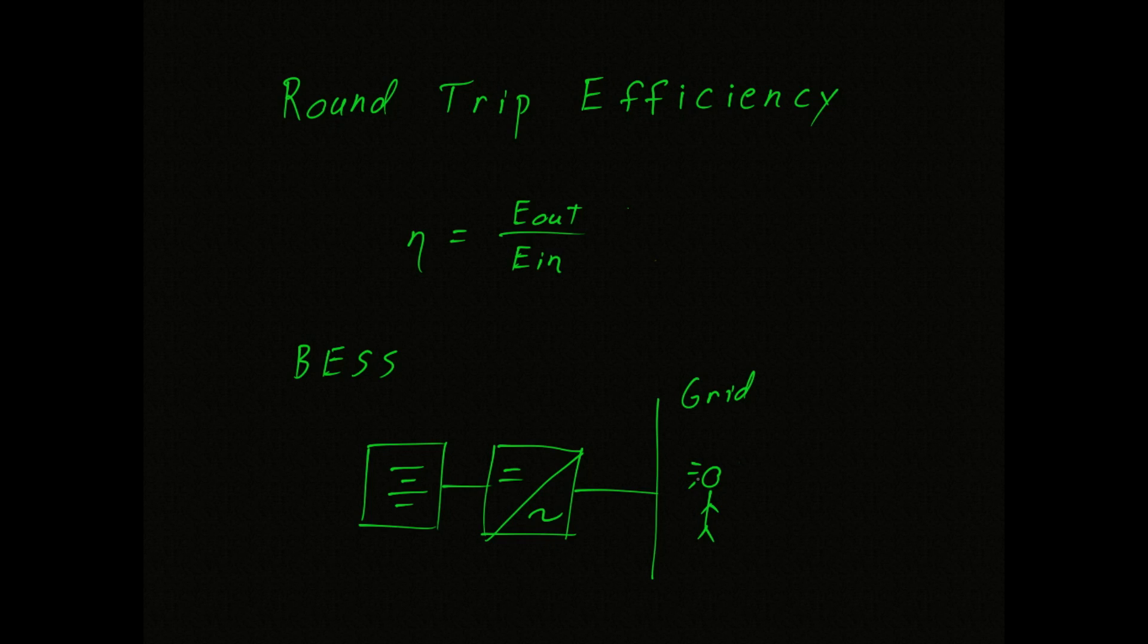Suppose the battery is completely drained. We're going to charge the battery using energy from the power grid. The energy is going to come into the converter as AC, it's going to be converted to DC, and then it's going to charge the battery. In that process, we could say that we have put one unit of energy in.